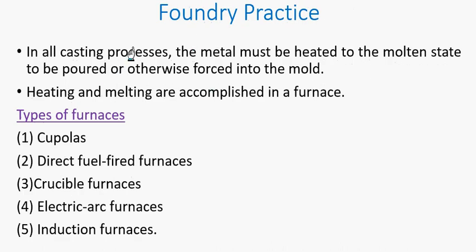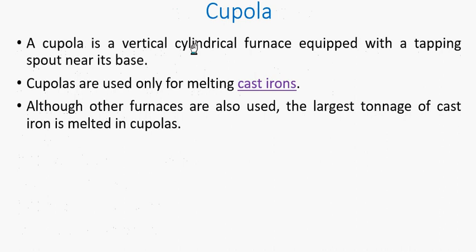In foundry practice, in all casting operations the metal has to be heated to a molten state and then poured into a mold to become solidified. This is done using furnaces, and we have about five typical furnaces used in foundry. Let's look at each in order.